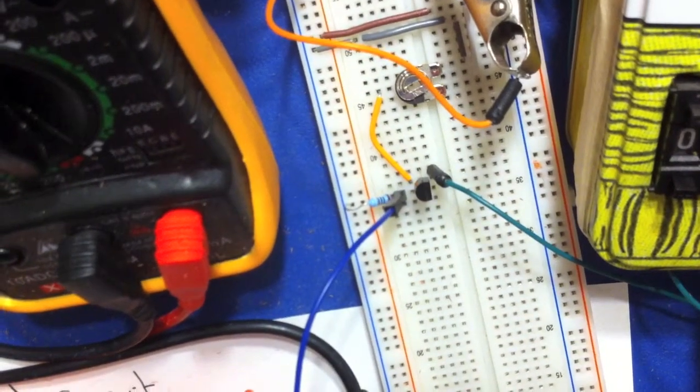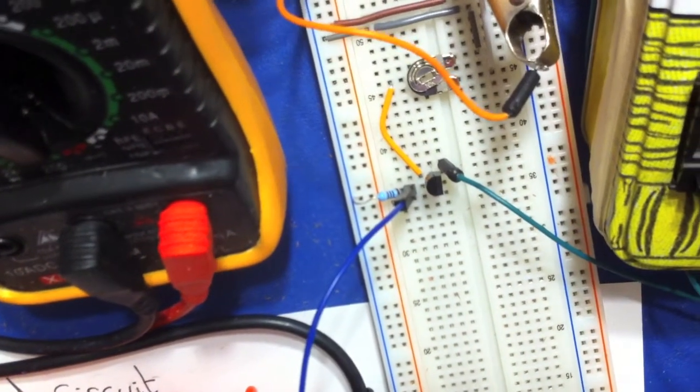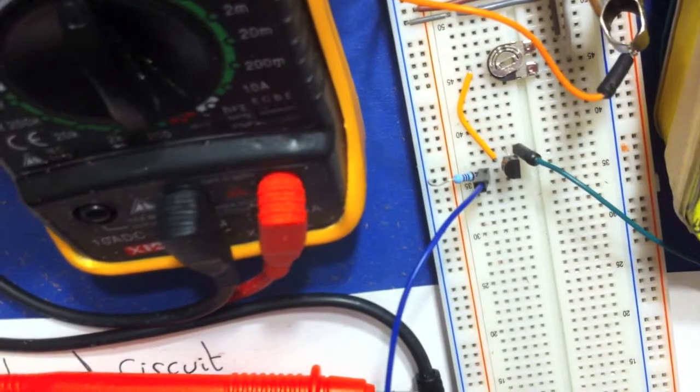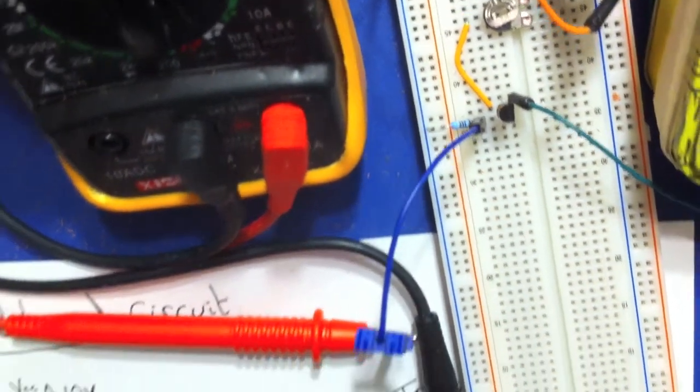The potentiometer, a 10K potentiometer, the transistor there in the middle, and to the one side we have the resistor. So that's it, three components.